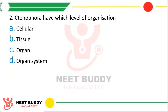Question two: Ctenophora has which level of organization? Option A, cellular level; option B, tissue level; option C, organ level; or option D, organ system level of organization? The correct answer is option B, that is tissue level of organization is found in Ctenophora. Cells combine to form tissues, tissues then form organs, organs then together form various organ systems. So as we keep moving on in animal kingdom, the level of organization keeps on increasing — from cellular level, to tissue level, then organ level, then organ systems level. So in Ctenophora, you find tissue level of organization.